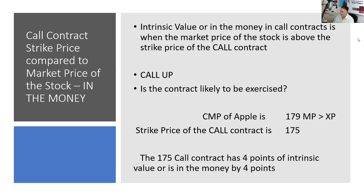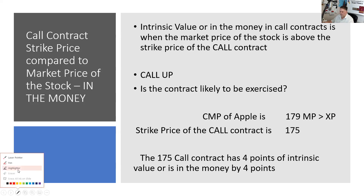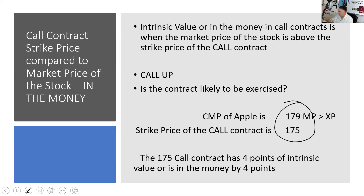It's not good news or bad news—that's a different question. You have to tell me whether you bought it or sold it and what the market price is. We're just asking about that relationship. Stay focused on what you're being asked about on the test. What we're asking you to recognize is the relationship between the strike price and the market price. Right now, this contract has four points of intrinsic value.